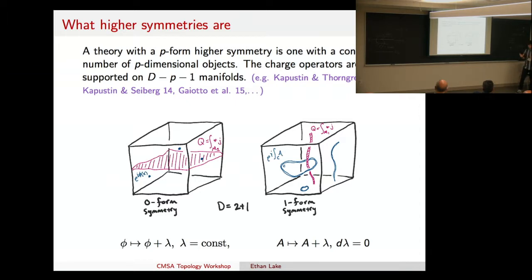So if I wanted to talk about something that has a one-form symmetry, then I would have a conserved number of one-dimensional strings. So in this example, they would be the blue strings, and if I want to detect them,